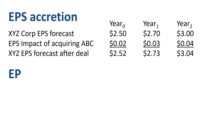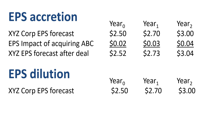Here's a numerical example of EPS dilution. The EPS forecast for the standalone company XYZ is the same $2.50 this year, $2.70 next year, and $3 two years from now.